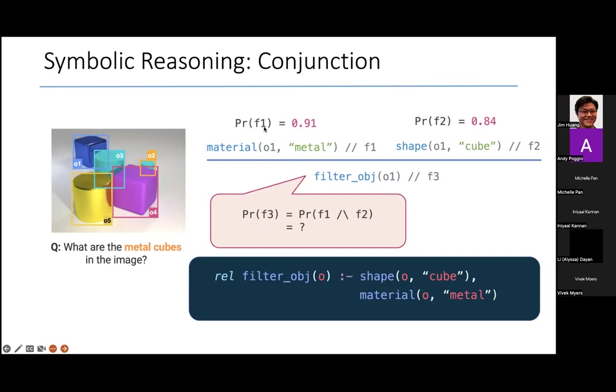Well, the neural network tells us that the object O1 is metallic with probability 0.91. It tells us that O1 is a cube with probability 0.84. And since this is the rule for conjunction, we can derive that the probability of F3 is, using this formula, 0.91 times 0.84, which is 0.76.